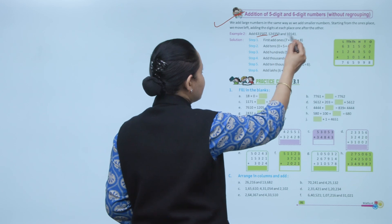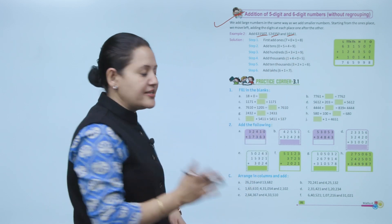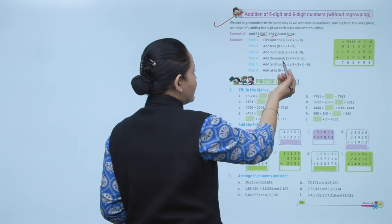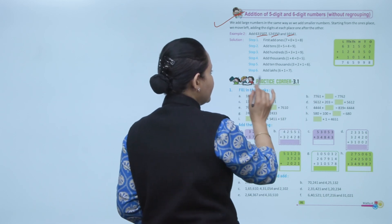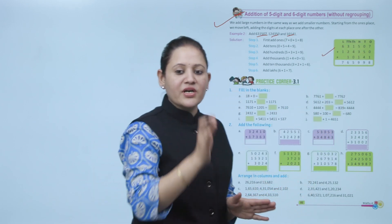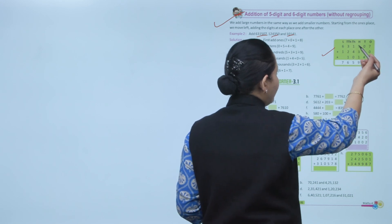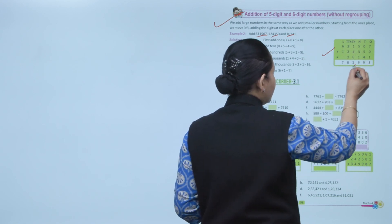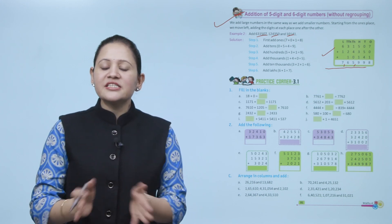Now we'll take an example. We have to add three numbers. Start from the ones: 7 plus 0 plus 1 is 8. Tens: 0 plus 5 plus 4 is 9. Hundreds: 5 plus 3 plus 1 is 9. Thousands: 1 plus 4 plus 0 is 5. Ten-thousands: 3 plus 2 plus 1 is 6. Lakhs: 6 plus 1 is 7. Arrange the numbers by place value. The sum is 7,65,998.